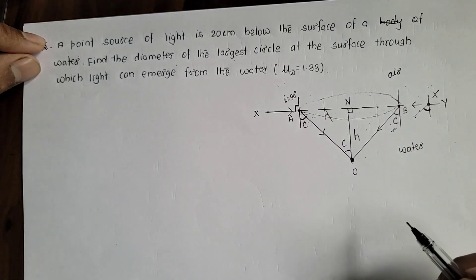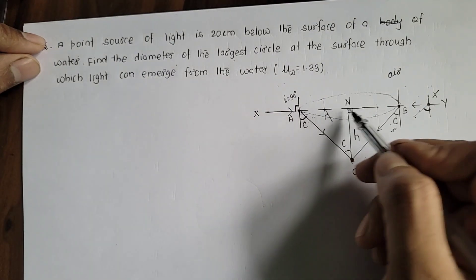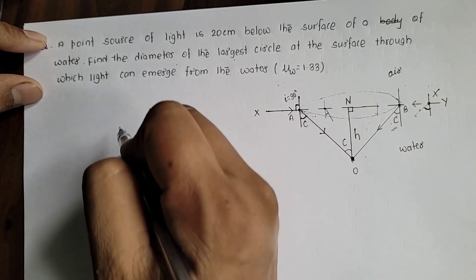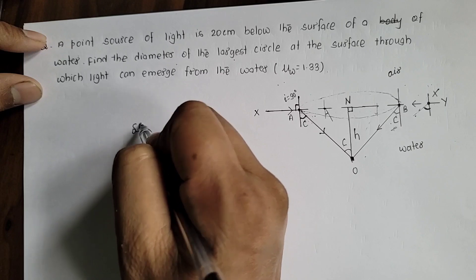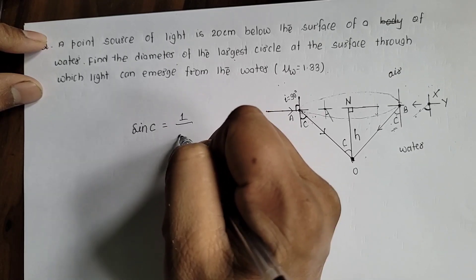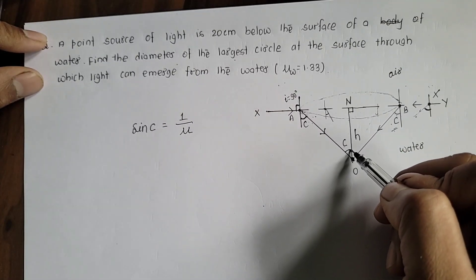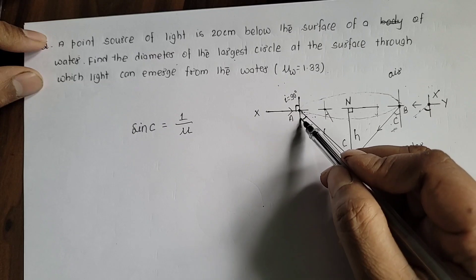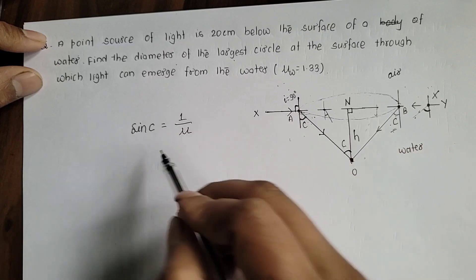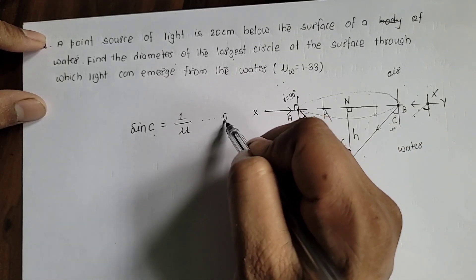Now we will assign a value to C. For a given pair of mediums, the value of sin C is equal to 1 divided by the refractive index μ. This gives us the maximum angle of refraction in the denser medium with which light can enter from the rarer to the denser medium: sin C = 1/μ — this is equation 1.